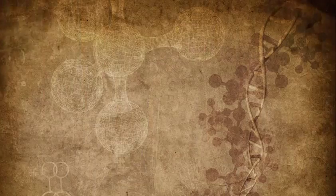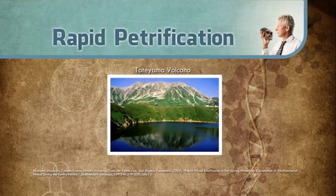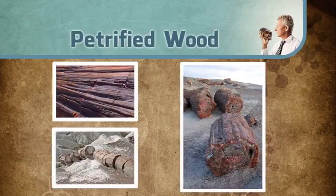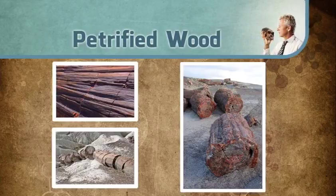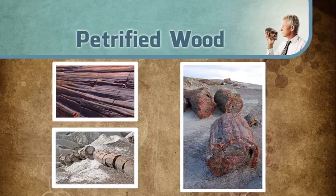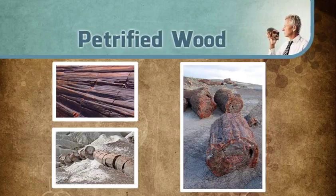For years it's been assumed that petrification is a process that takes millions of years to complete. But more and more scientific evidence is coming to light which proves that the rate of petrification can be significantly altered by catastrophic events. For instance, in 2004, five Japanese scientists published research on rapid petrification in the secular evolutionary journal Sedimentary Geology. They were studying mineral-rich acidic water from the explosion crater of the Tatayama volcano in central Japan. Some wood had fallen in the path of that mineral-rich water, and the surprising discovery was that the wood had become petrified with silica after only 36 years as the water flowed over it.